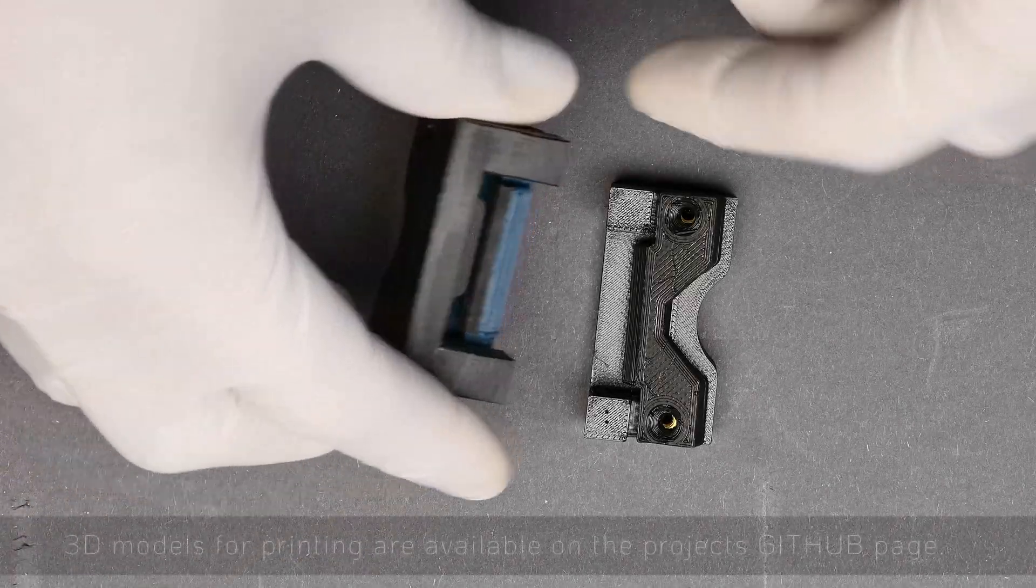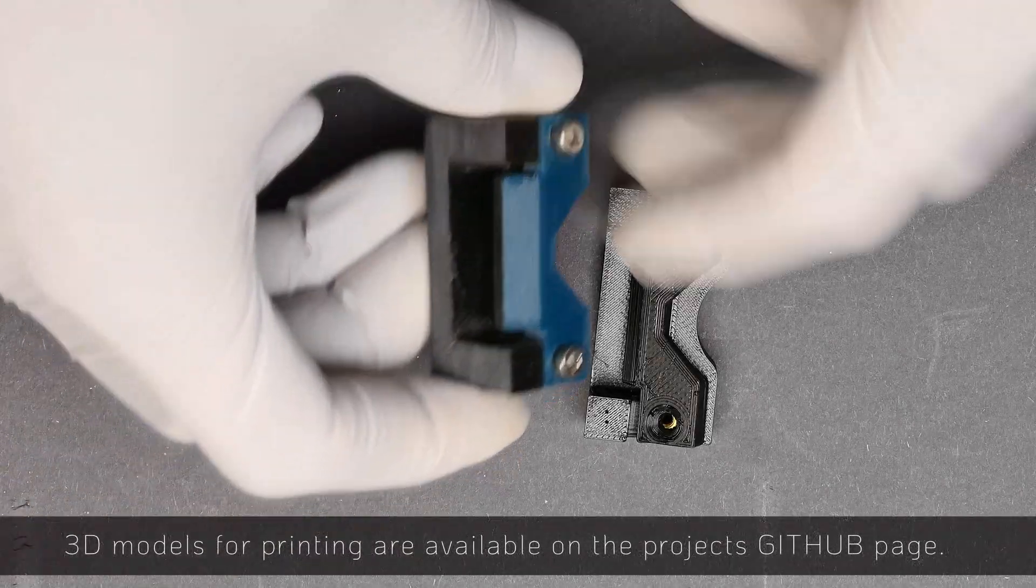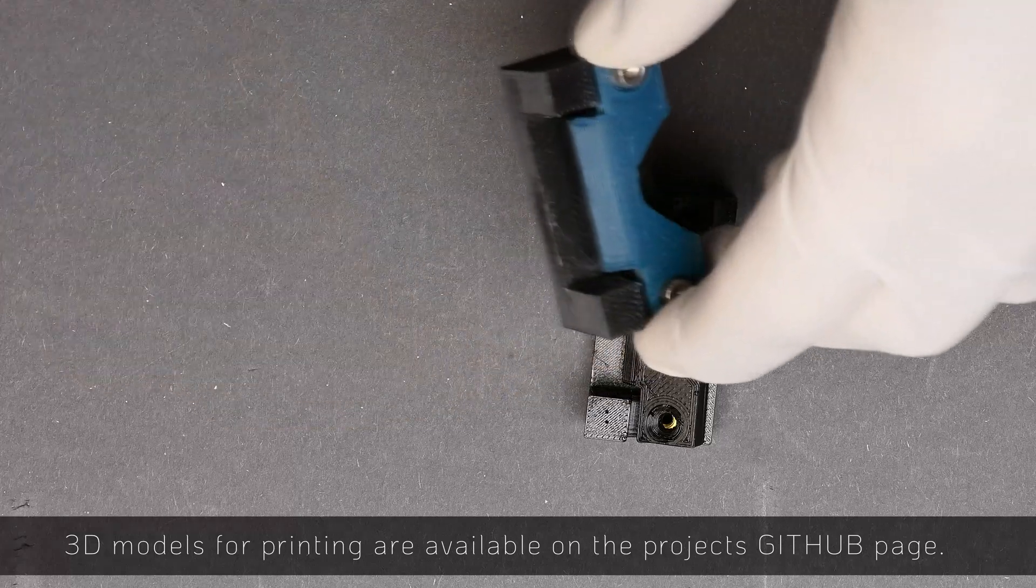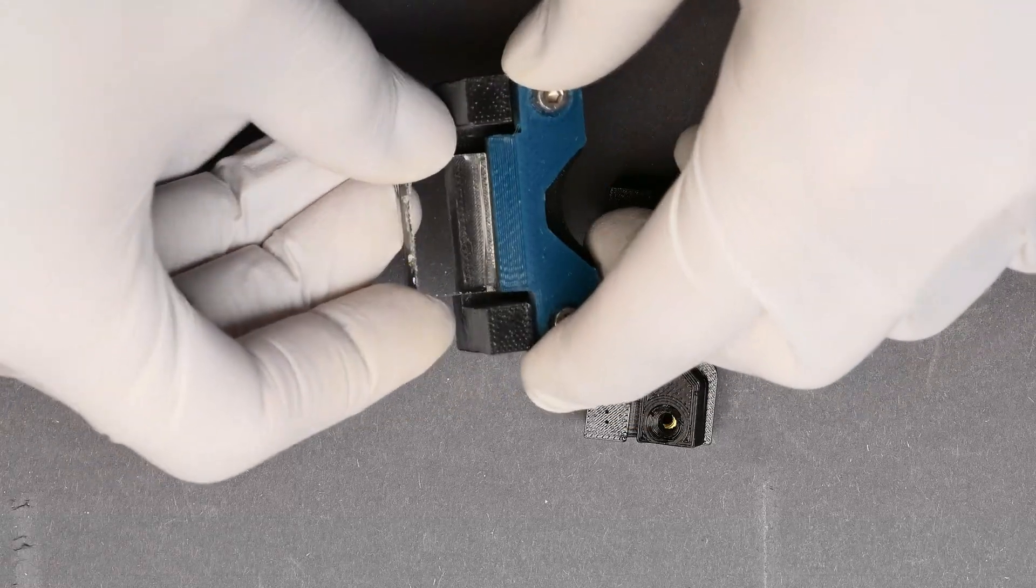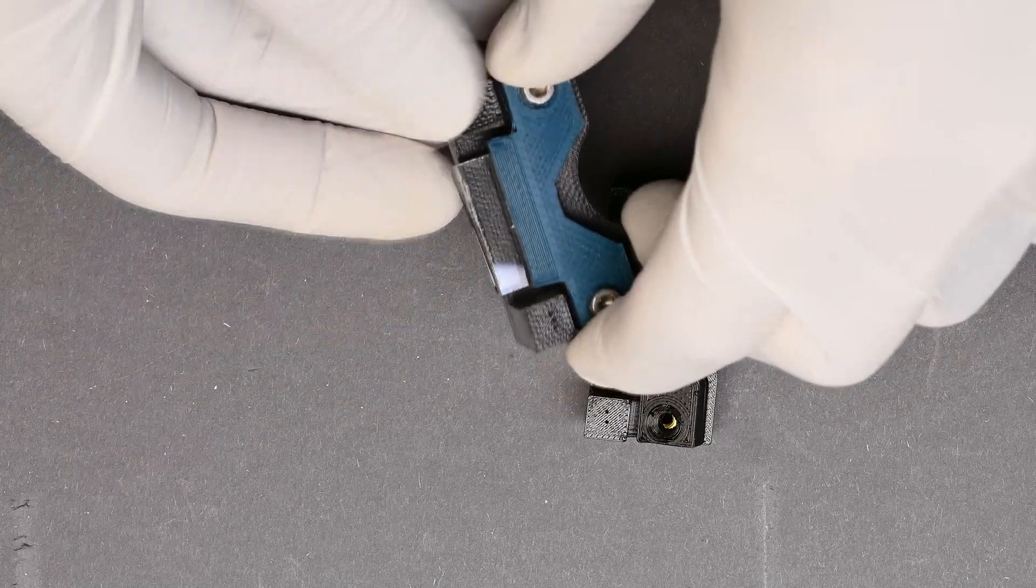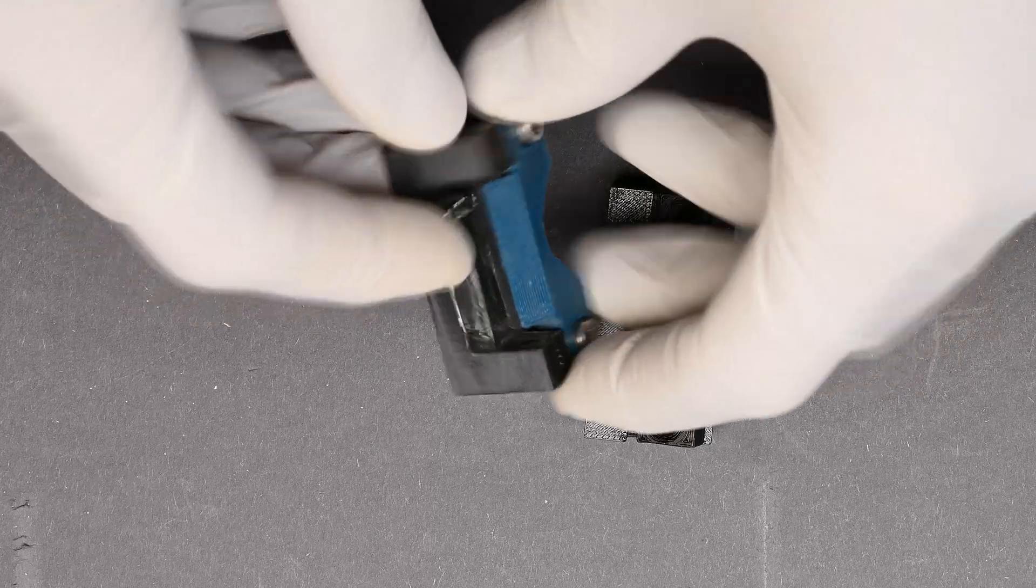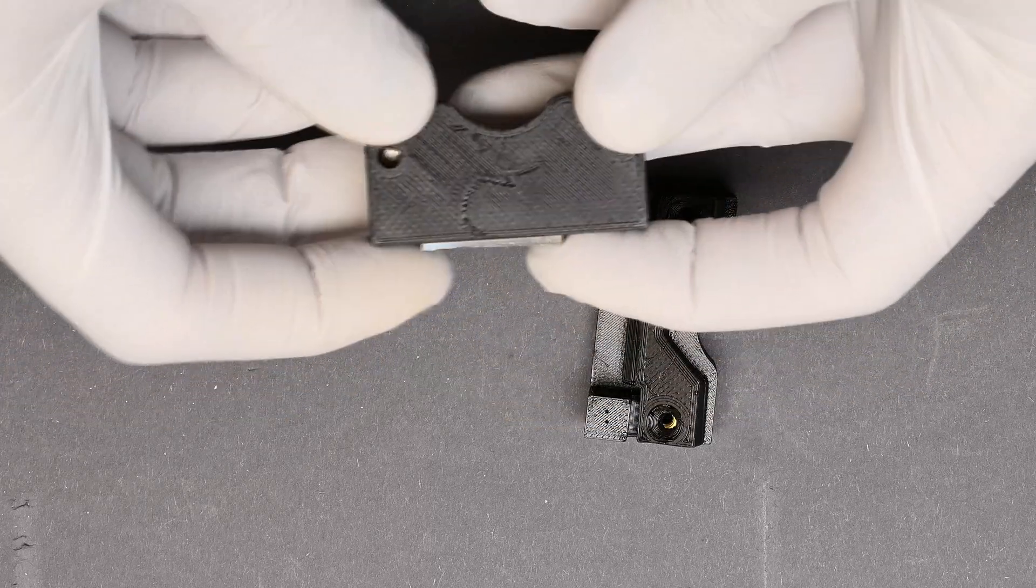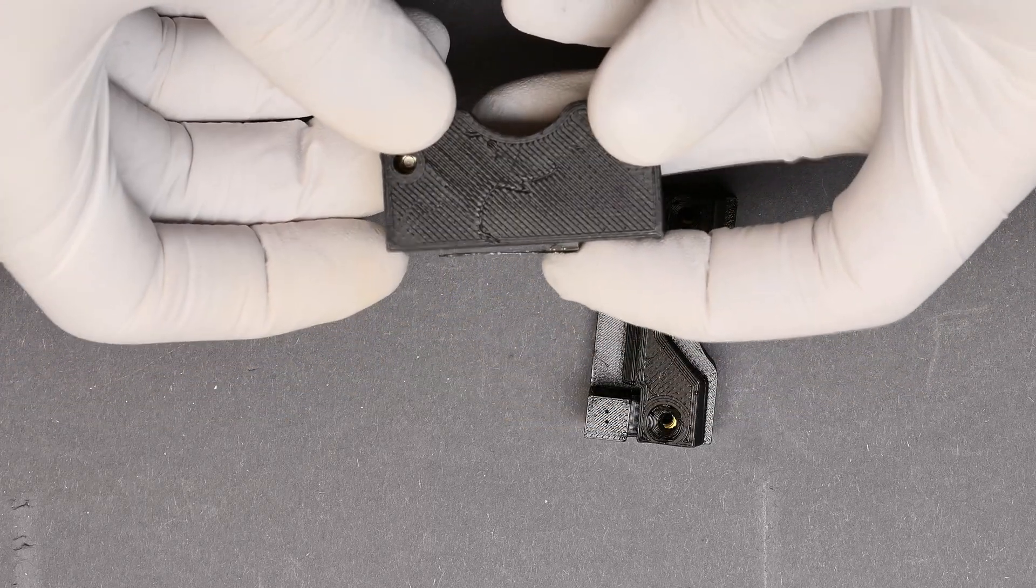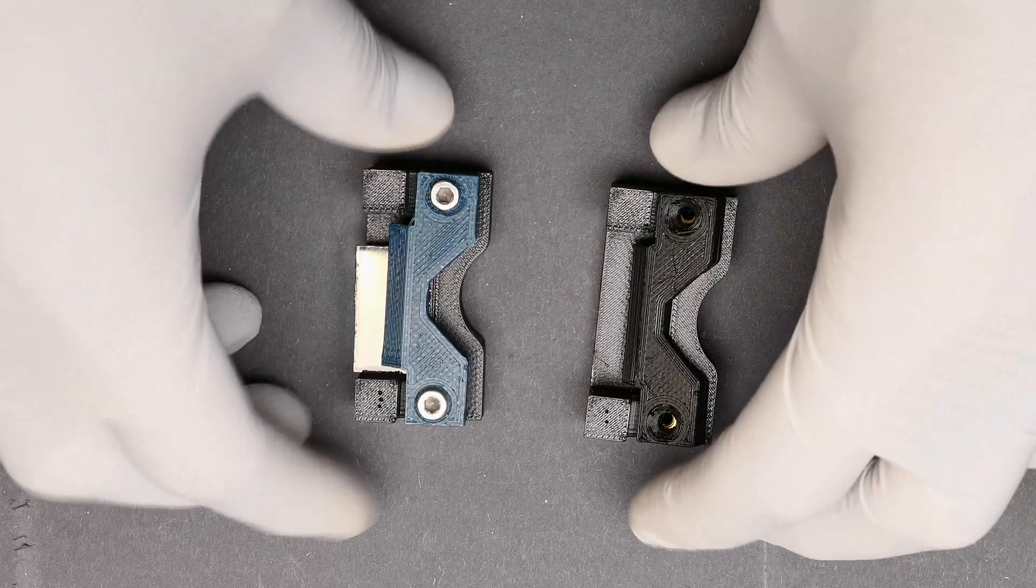To bring the blanks to the required size, a couple of 3D printed grinding jigs will be used. With these jigs the grinding process is quite easy. Note that small geometric deviations will not affect the performance of the interferometer. So while this step is theoretically optional, it is highly recommended.